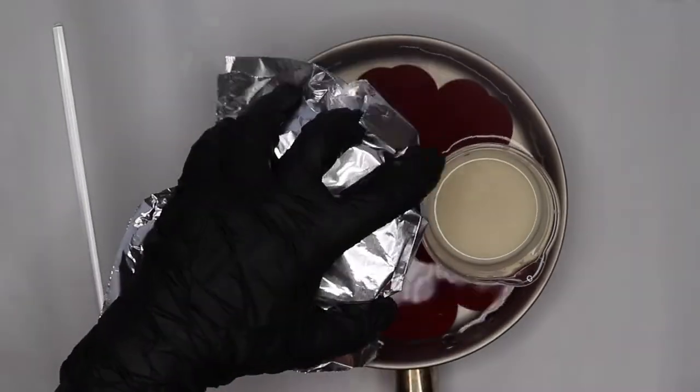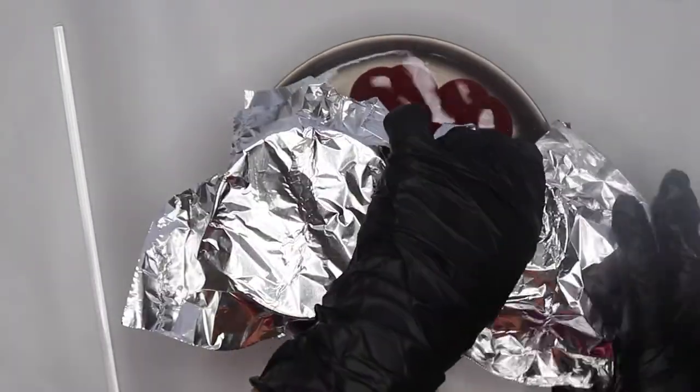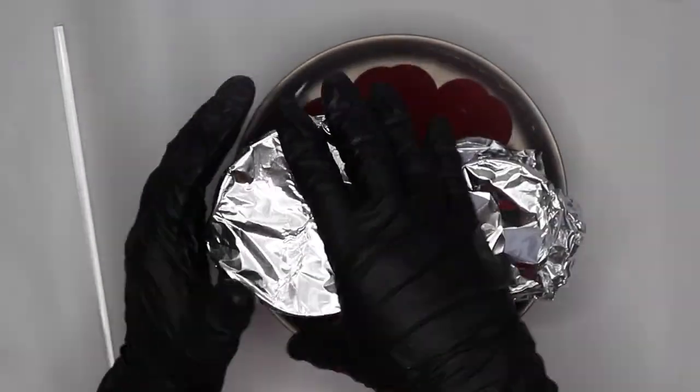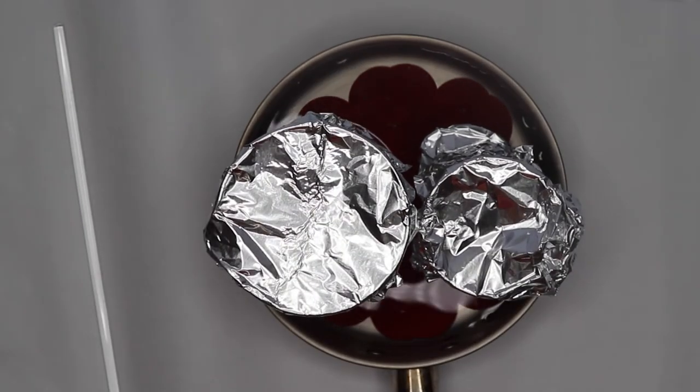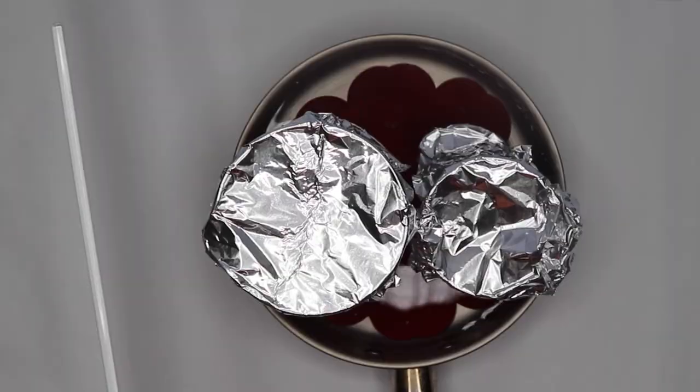In a small sauté pan I will add my oil phase and my water phase. I will cover them with foil so any content does not evaporate. I will heat them up until everything has melted, and I will come back and combine it.